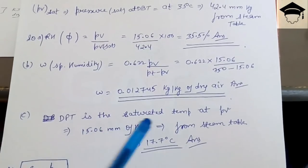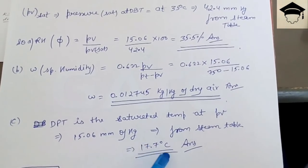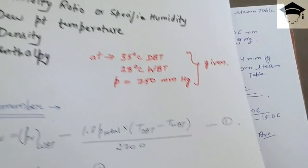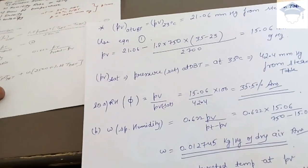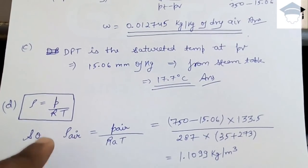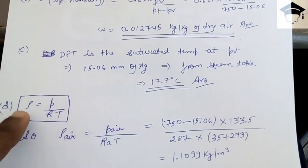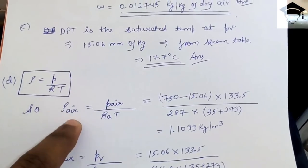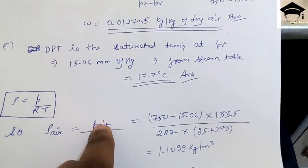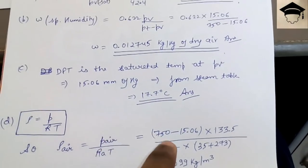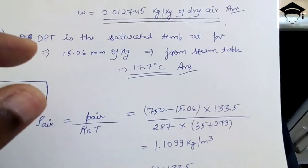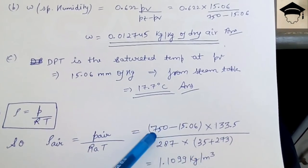For density, use ρ = P / (R × T) from the ideal gas law. Density of dry air uses the air pressure only, which is total pressure minus partial pressure of vapor: P_air = (750 − 15.06) mmHg. Convert mmHg to N/m² by multiplying by 133.5. Use R_air = 287 J/kg·K (= 8314/29) and T = DBT + 273 K.